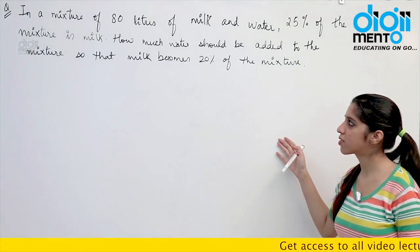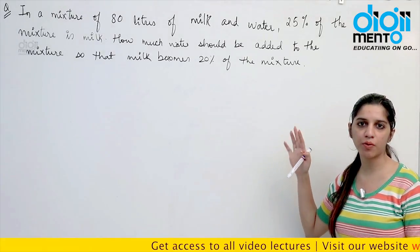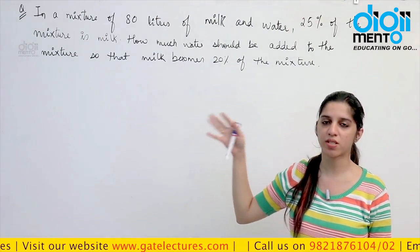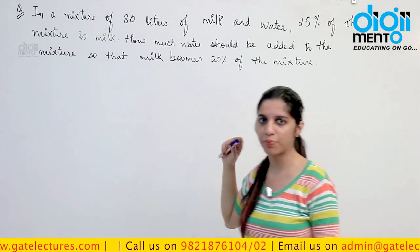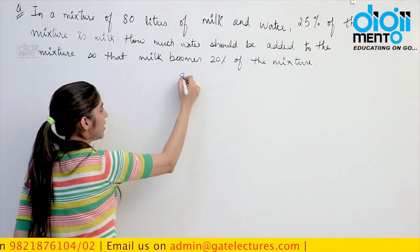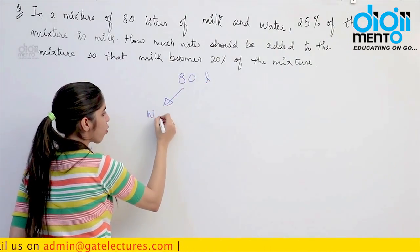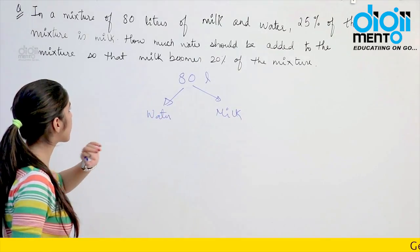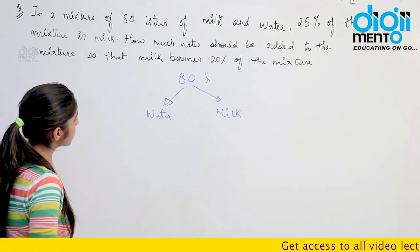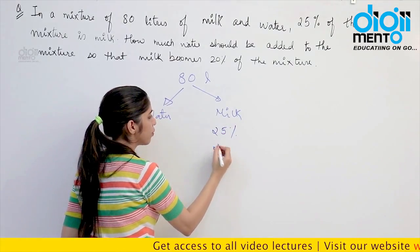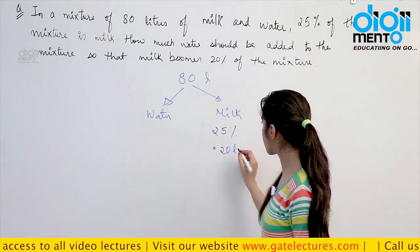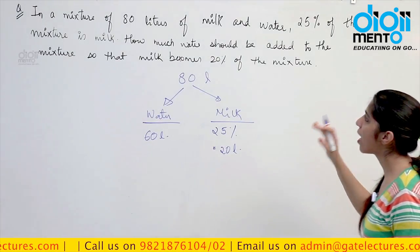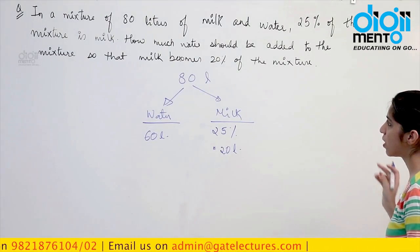Now look at the next question. This is a question on mixtures — we are going to look at it from the viewpoint of percentages only. They say that there is an 80-liter mixture, some part is water and some part is milk. They say that 25% of the mixture is milk. So 25% of 80, that means one-fourth, is going to be 20 liters. So there was 20 liters of milk initially and 60 liters of water.